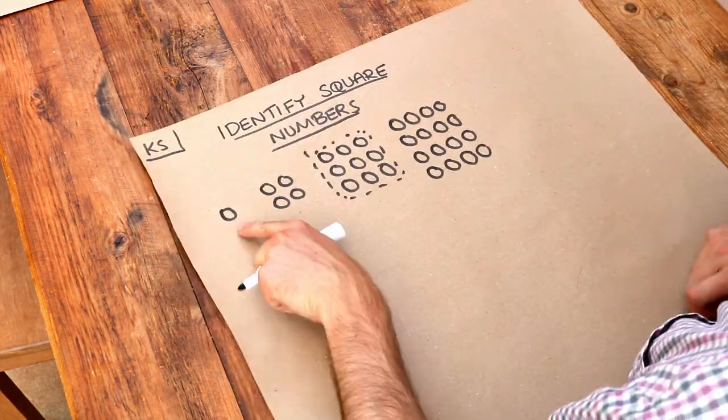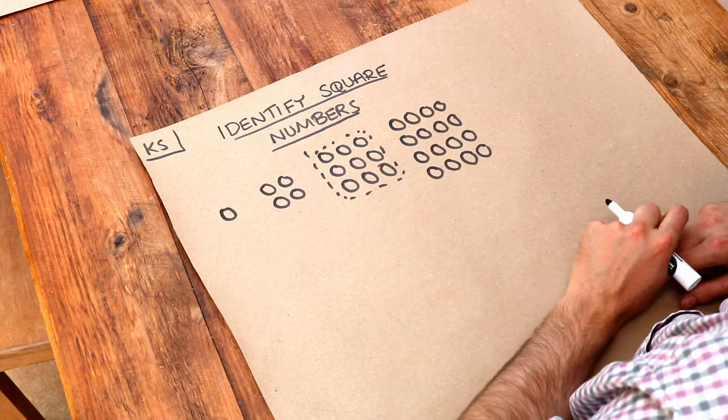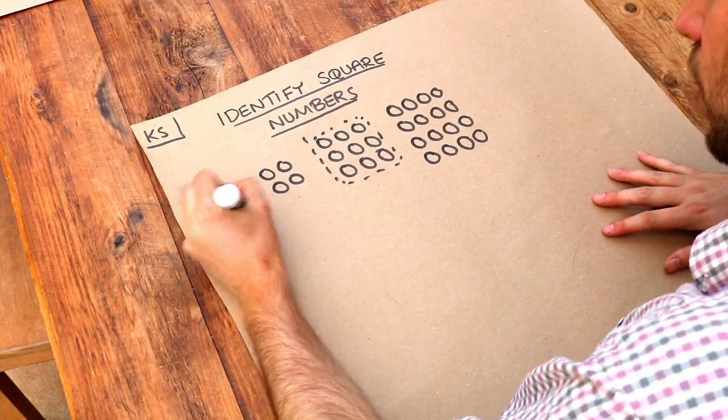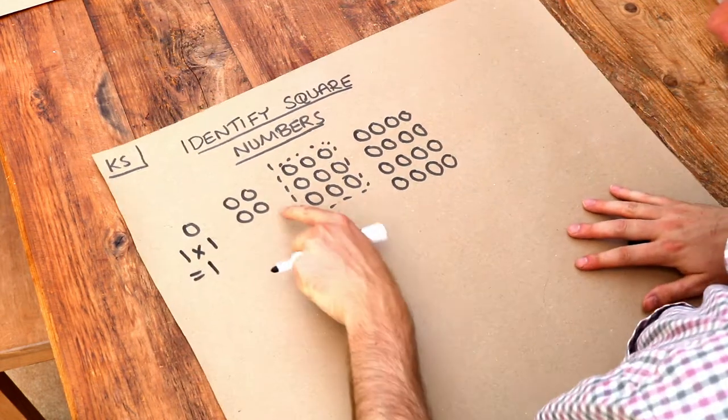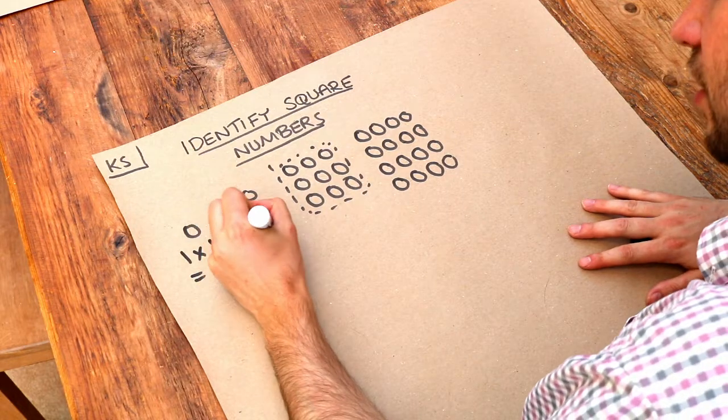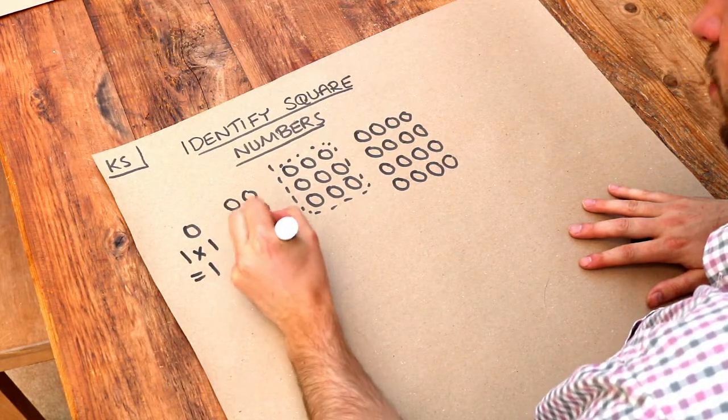Now how many dots do we have in total in each of these patterns? Well we've got one row of one, so we can do one times one, which is equal to one. Here we've got two rows of two, so two lots of two, that's two times two, which is equal to four.